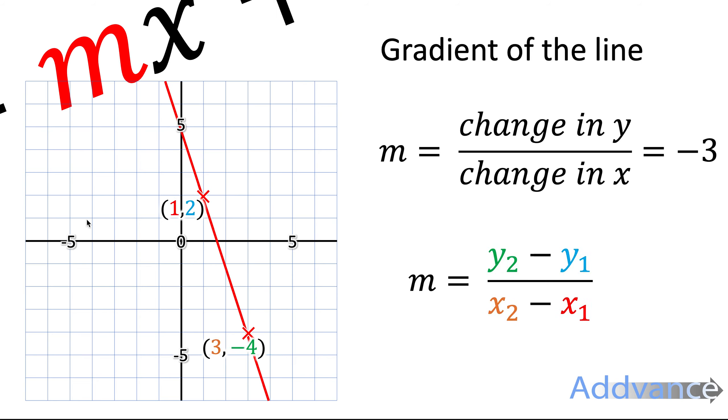Now let's do it the other way, so we're going to do it with the coordinates now. y2 minus y1 over x2 minus x1. This is the first x coordinate, this is the first y coordinate. In orange, we've got the second x coordinate, and in green, we've got the second y coordinate.